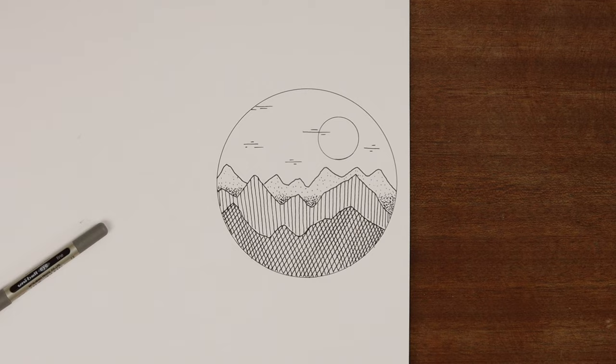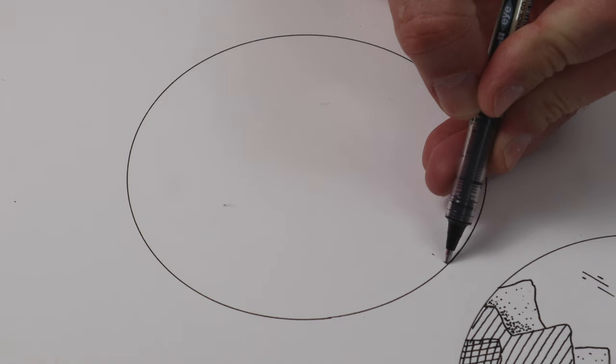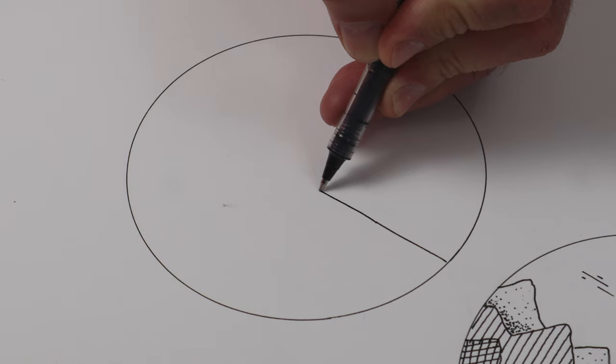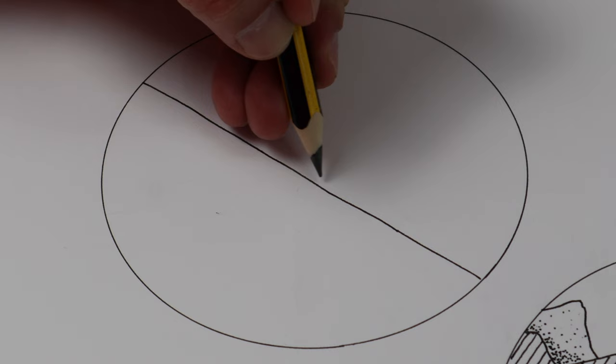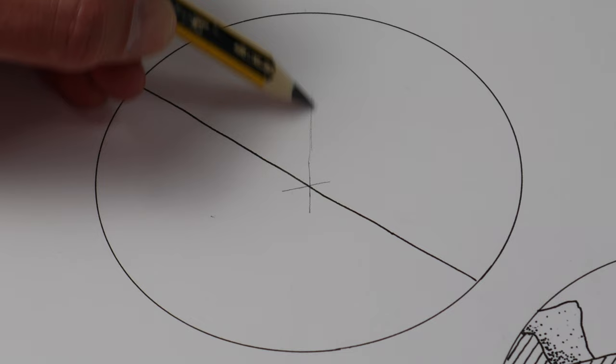One point perspective is really easy. It just means that some lines need to go to a single point. First, draw a horizon line across the circle. Then mark an X in the middle. I'm using a pencil now so I can rub these lines out later.